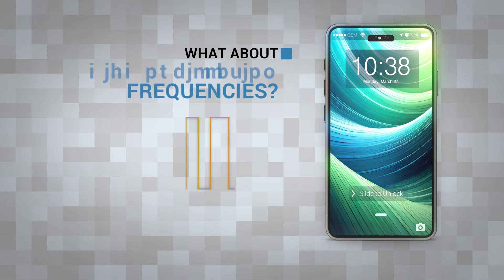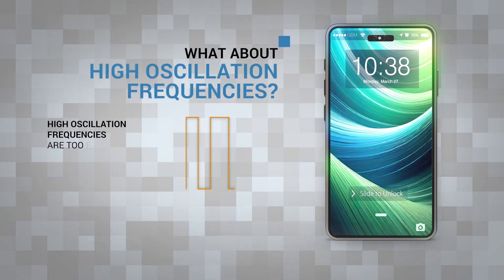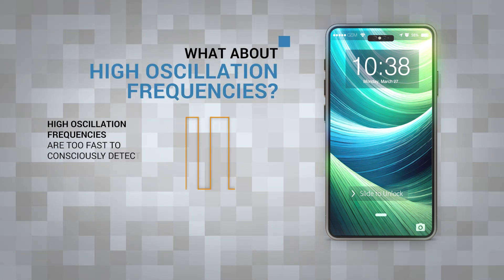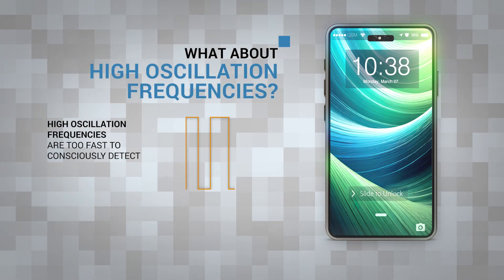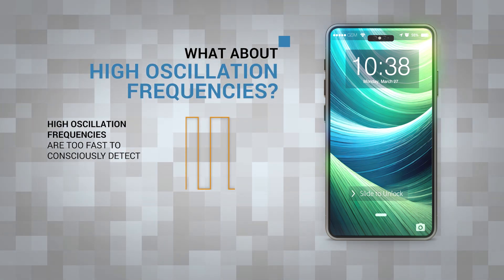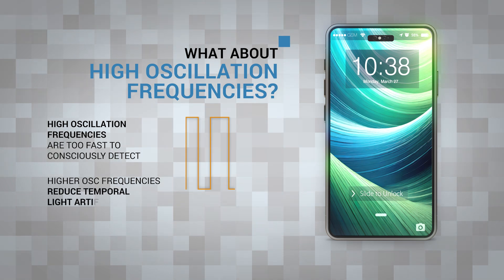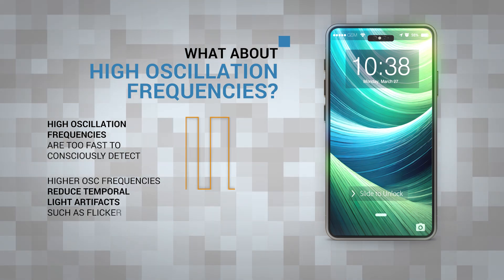On the other hand, a higher oscillation frequency would be too fast to consciously detect, which reduces or eliminates temporal light artifacts like flicker.